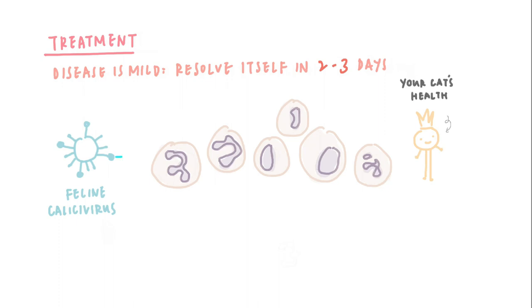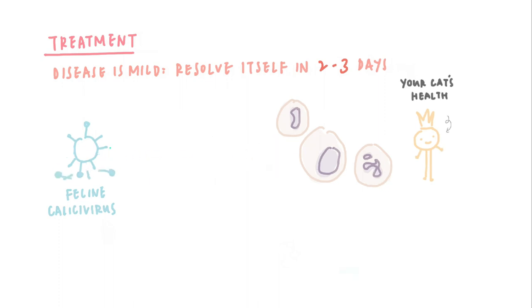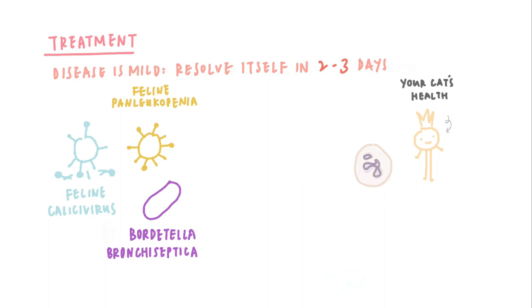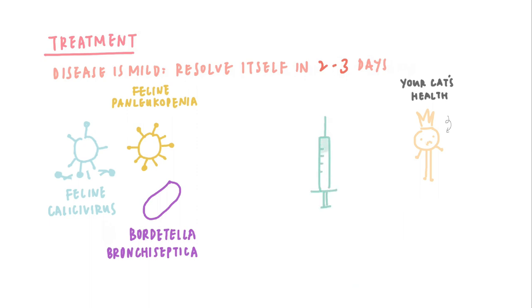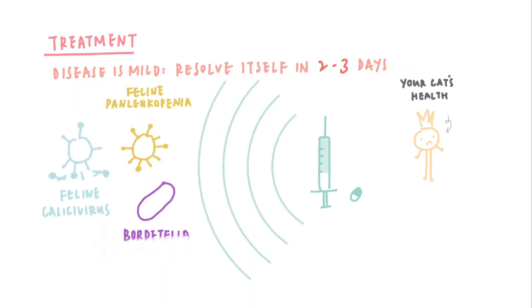Treatment. If the disease is mild, it will resolve itself in two to three days. However, during these days the cat's immune system is weakened by the virus, and that means other viruses and bacteria — like feline panleukopenia and Bordetella bronchiseptica — can easily slip into the cat's body, and we may suddenly see pneumonia and even death. To prevent this, your vet will give antibiotics to keep out other bacteria and also provide supporting treatments, just to prevent things from taking a sudden turn for the worse.